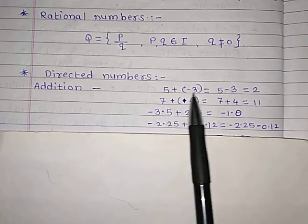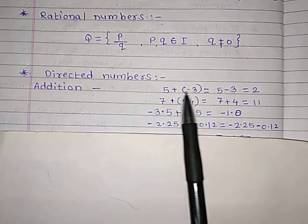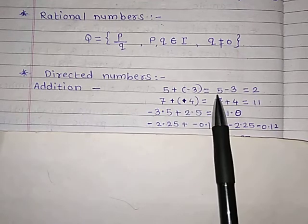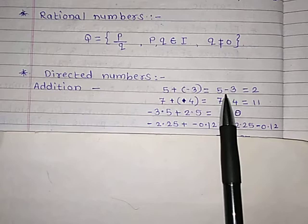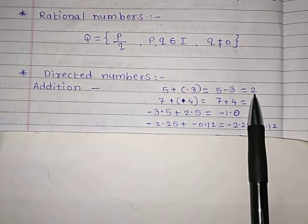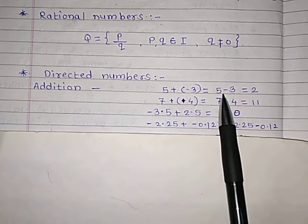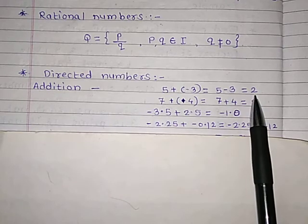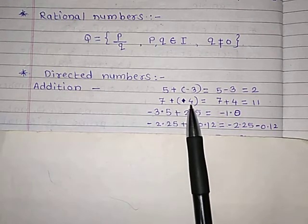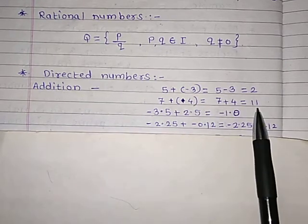5 plus minus 3. As all of you know, plus and minus becomes minus. So it will be 5 minus 3. Bigger number minus smaller number — answer is 2. And we give the sign of the bigger number, that is 5, which is positive, so it will be plus 2. Second one: 7 plus plus 4, which equals directly 7 plus 4, which equals 11.